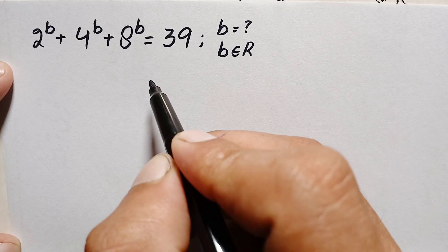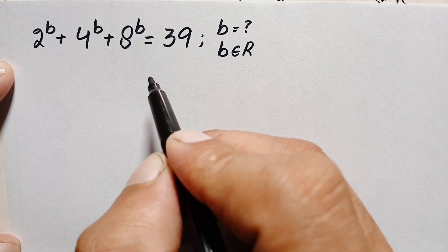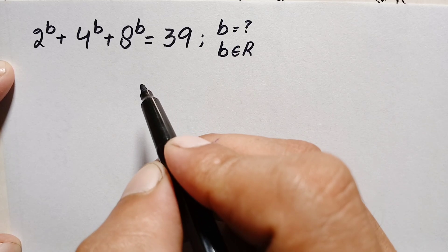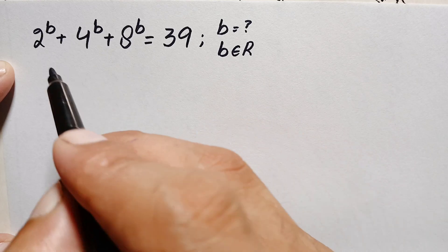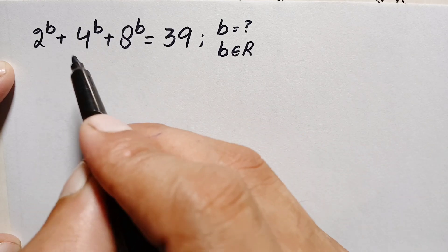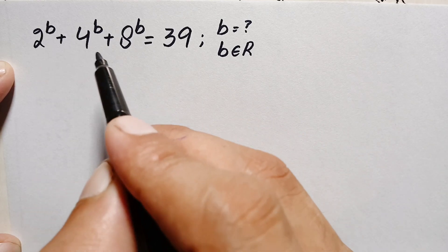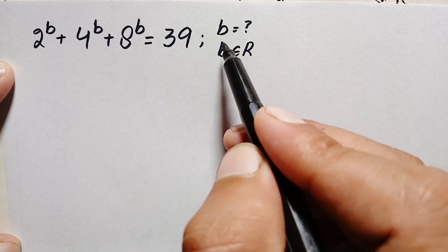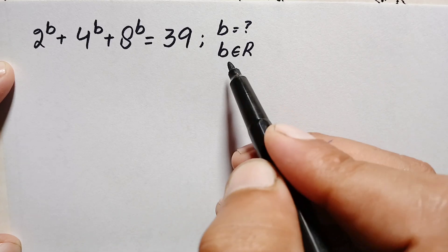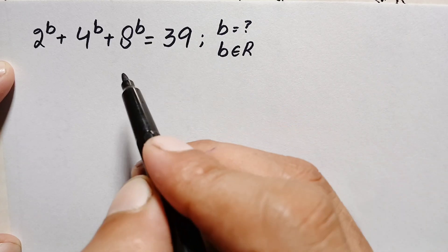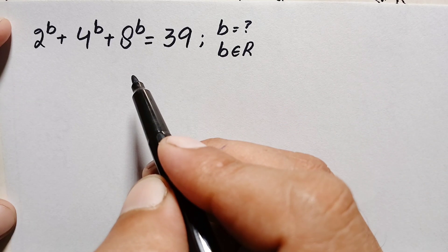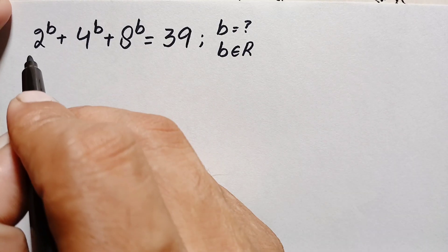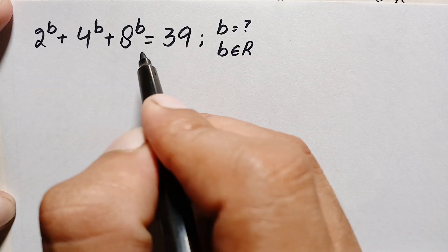Hello everyone, you are welcome. Today we have a new beautiful exponential math problem: 2 raised to power b plus 4 raised to power b plus 8 raised to power b is equal to 39. We will try to find the real solutions of this problem. Let's start our solution.